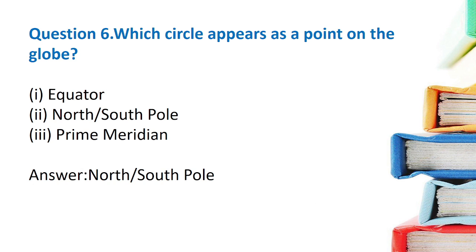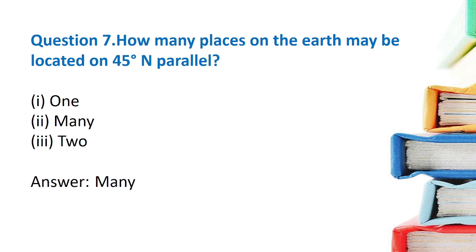Question 6: Which circle appears as a point on the globe? Options are equator, north-south pole, and prime meridian. The answer is north-south pole. Question 7: How many places on the earth may be located on a 45 degree parallel? Options: one, many, or two. The answer is many places.